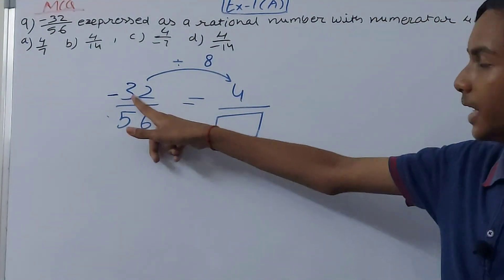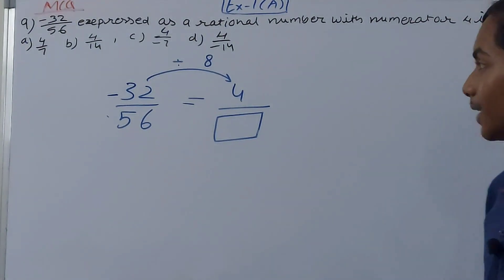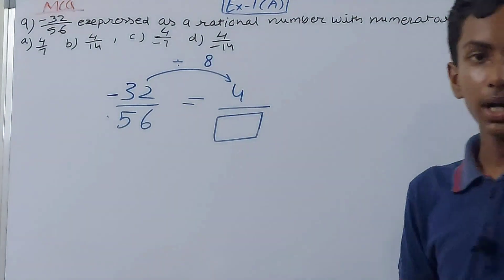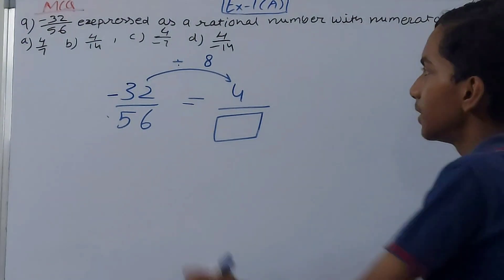We are going to divide 32 by 8 to get to 4. Now next step, you can see the minus sign, so we'll divide by minus 8 instead.